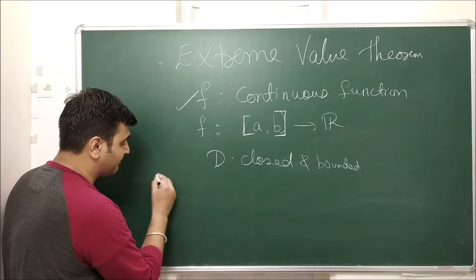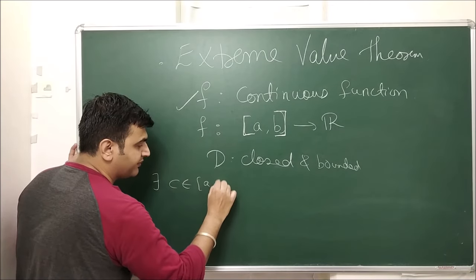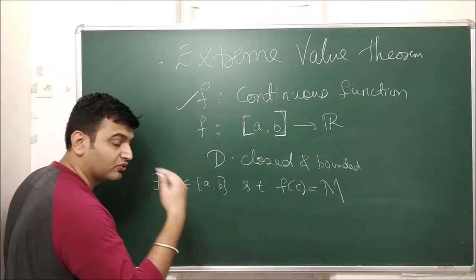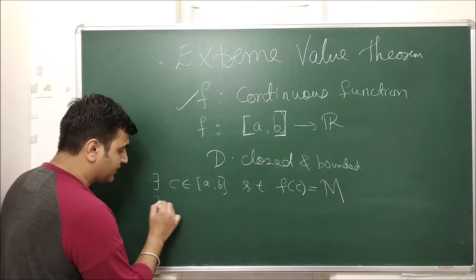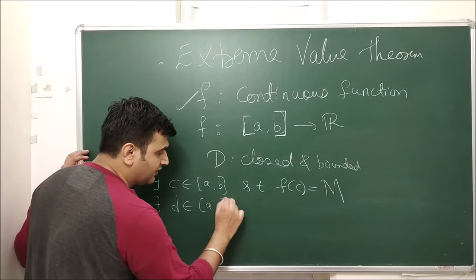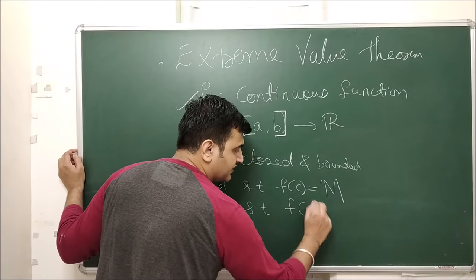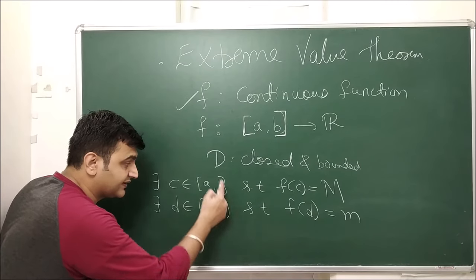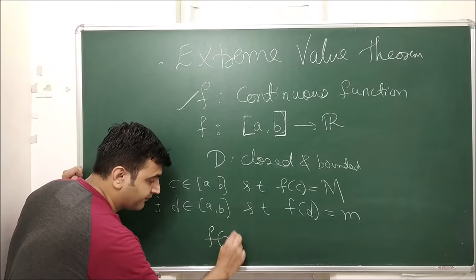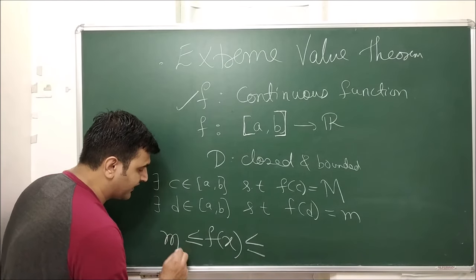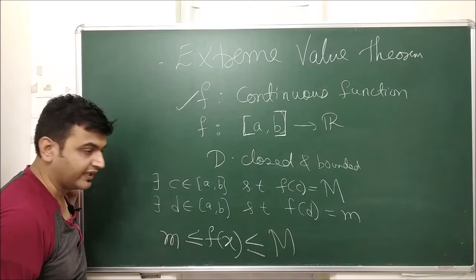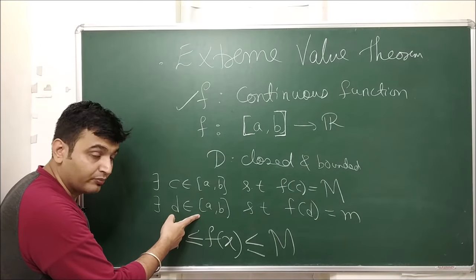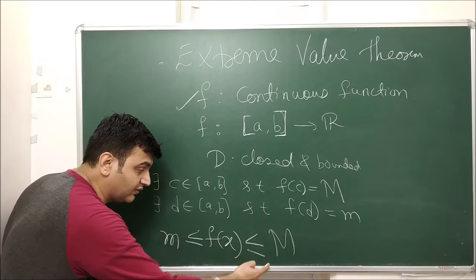Specifically, there exists some point c in the closed interval [a, b] such that f(c) = M is the maximum value, and there exists some point d in the interval such that f(d) is the minimum value. For any x in the domain, f(x) always lies between the minimum and the maximum value, because M is the largest and m is the smallest.